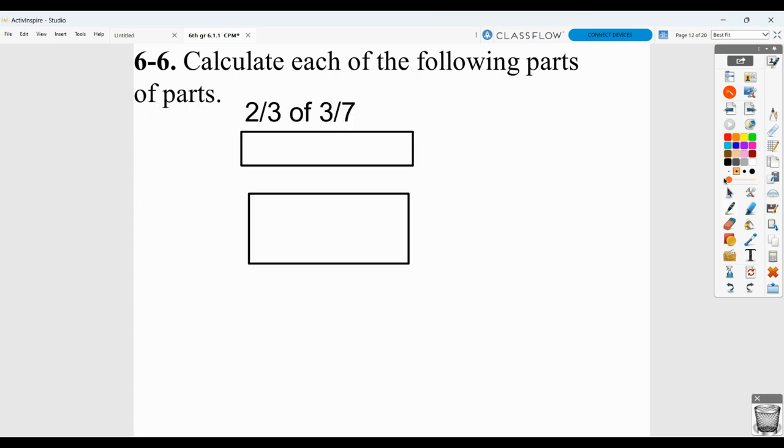Calculate these parts. Two-thirds of three-sevenths. Again, of means multiply. So if we multiply straight across, we get 6 over 21, which is two-sevenths.